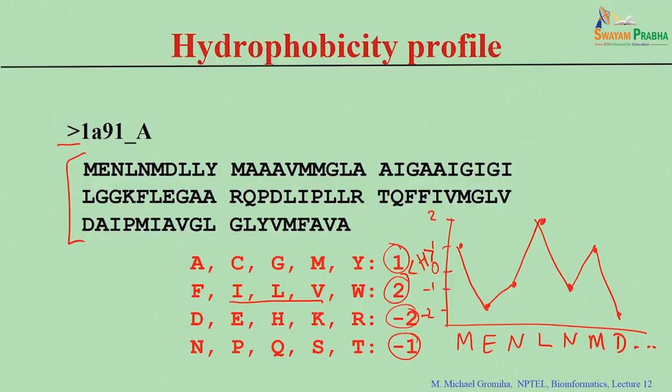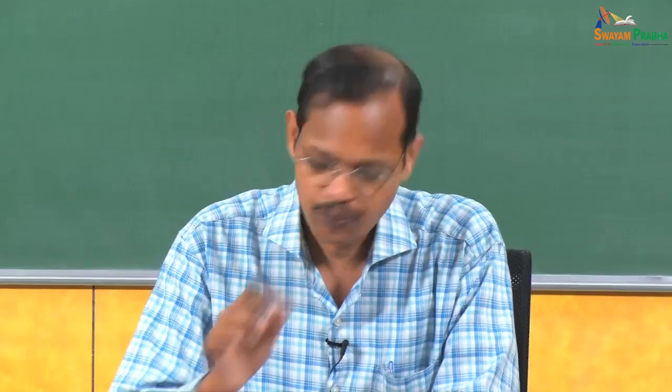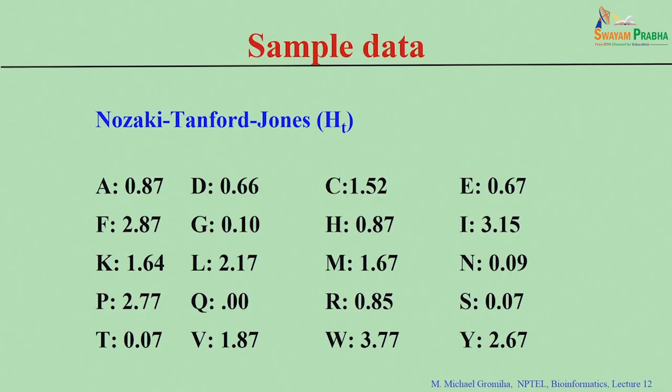There are various software tools available to make such a plot. One available in the literature is called 3D Insight, which considers various properties and takes hydrophobicity values along with other properties to make a graph. The x-axis is the amino acid index and the y-axis is the hydrophobicity profile or any other property. In constructing this profile here, I used values of 1, minus 1, and minus 2.